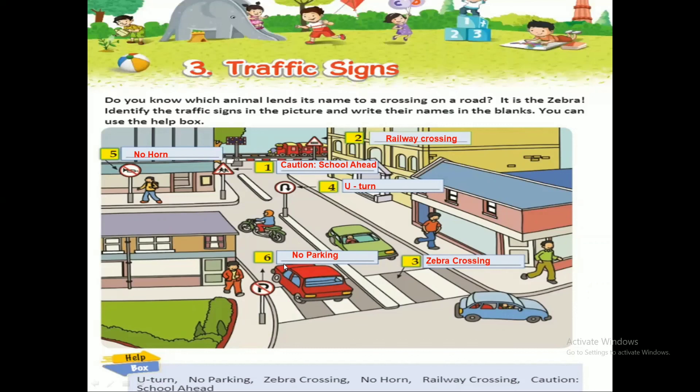So children, in this chapter we learned about traffic signs. Your assignment is to complete your exercise with the help of the given PDF and the explanation. Complete chapter 3, traffic signs, and try to memorize it. Till then, everyone stay safe, stay healthy, and bye-bye.